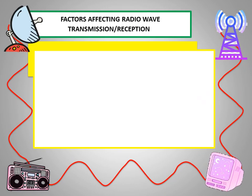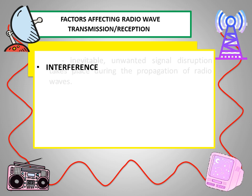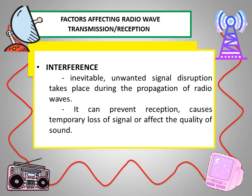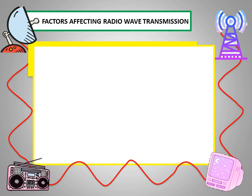What are the factors affecting the successful transmission and reception of radio waves? Interference: it is an inevitable, unwanted signal disruption that takes place during the propagation of radio waves. It can prevent reception, cause temporary loss of signal, or affect the quality of sound. There are different types of interference.